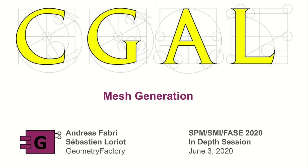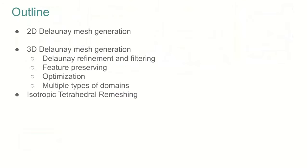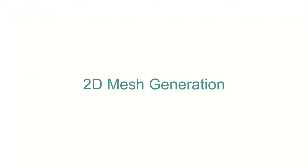Welcome to this in-depth session about mesh generation in the computational geometry algorithm library. My name is Sébastien Louriau, and I'm going to explain how the Delaunay triangulation is used to generate triangle meshes in both 2D and 3D, as well as tetrahedral meshes in 3D. I will also present a method to improve the quality of tetrahedral meshes using iterative atomic operations. For now, let's focus on the generation of 2D triangle meshes.